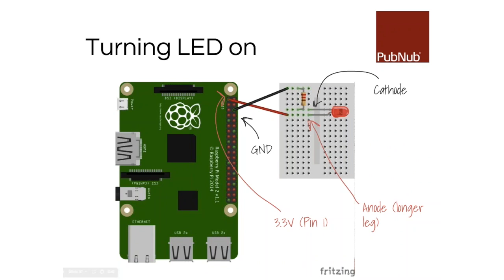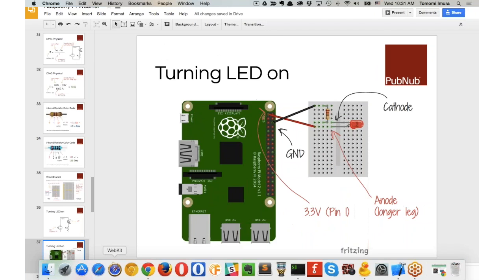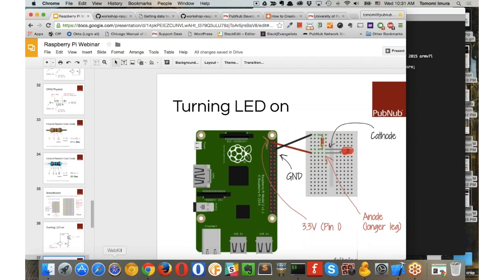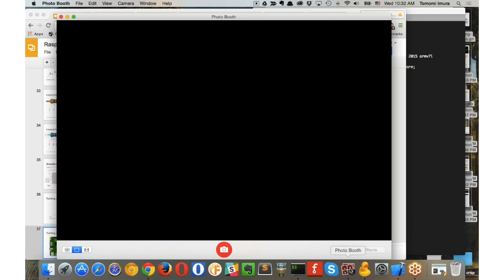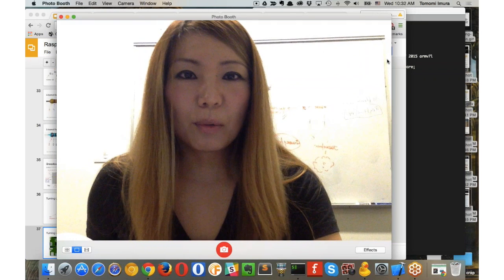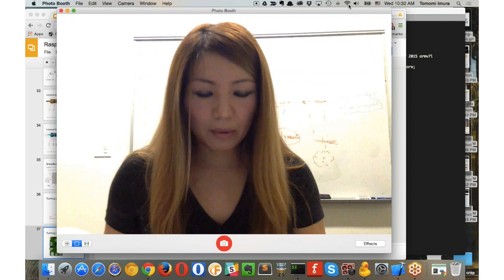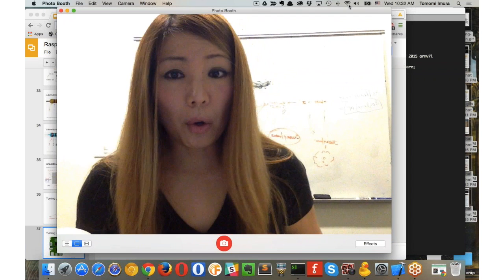I'm going to switch to a camera to show you the real thing. I'll use Photo Booth. Can you see me? I can't hear your voice so I don't know if you can see me. Okay, they can see — cool, let's do it.